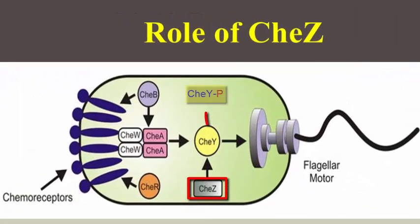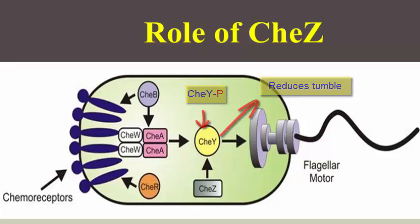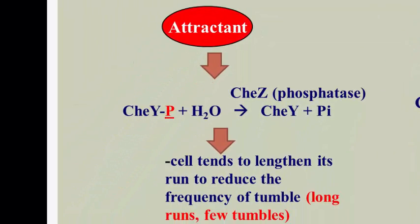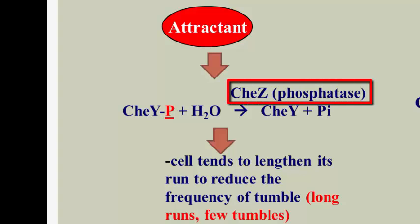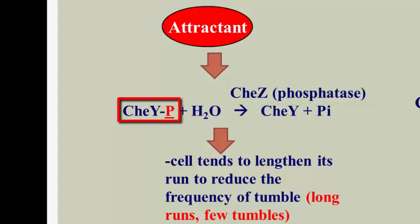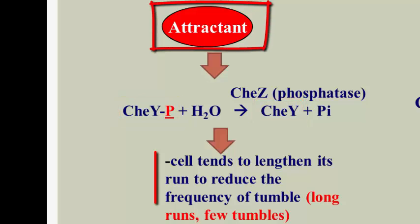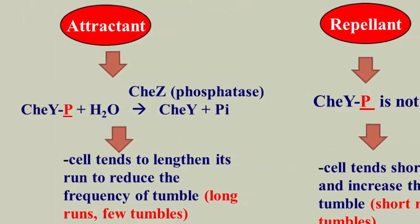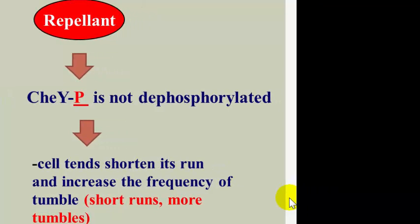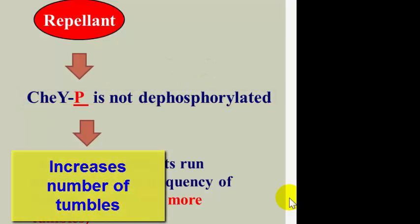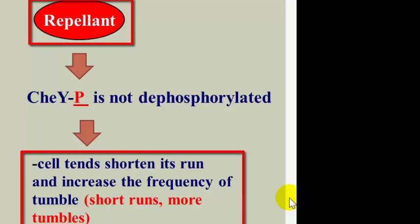CheZ determines the level of phosphorylated CheY (CheYP) — it dephosphorylates CheYP, which reduces the number of tumble signals. In the scenario where the MCP detects an attractant, CheZ, which is a phosphatase, dephosphorylates CheYP. This reduces the amount of phosphorylated CheY and results in less tumbling. Thus, in the presence of an attractant, the cell tends to lengthen its run, resulting in long runs and few tumbles. In the scenario where the MCP detects a repellent, CheZ loses its activity and cannot dephosphorylate CheYP, increasing the number of tumbles. Thus, in the presence of a repellent, the cell shortens its run, resulting in short runs and more tumbles.